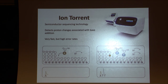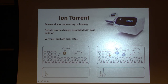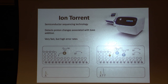Ion Torrent is another one, now owned by Thermo Fisher. It basically detects proton changes - it's more of a digital readout. You add an A and it detects a proton; add two T's and you see two protons. This is potentially faster but has higher error rates. Unfortunately for Thermo Fisher, this sequencing platform is having difficulty competing with Illumina.